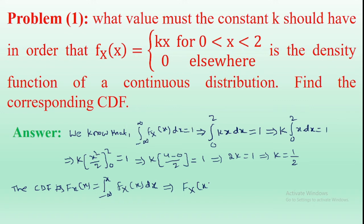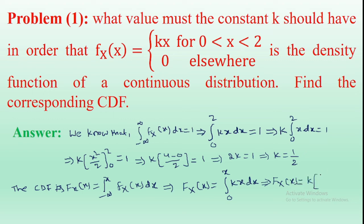F(x) equals... from the given data the density function is kx. Now, the x value starts from 0. According to the definition of the distribution function, the range starts from minus infinity. Here the density function f(x) = kx, with x starting from 0 and the final value remaining as x. So F(x) = k times the integral from 0 to x of x dx = k times x²/2, evaluated from 0 to x.